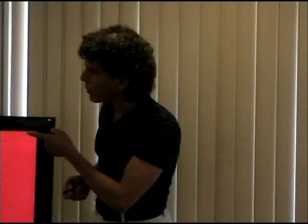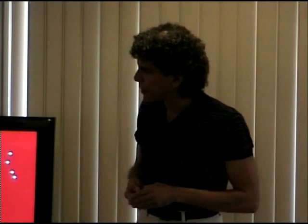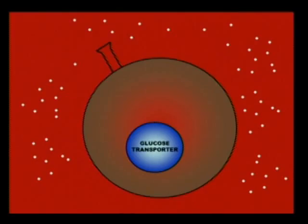So when the brain senses this sugar coming into the blood from a meal that you've just eaten and blood sugar is starting to rise, what the brain does is it signals the pancreas over there to start producing insulin. Insulin is one of the things the pancreas makes.